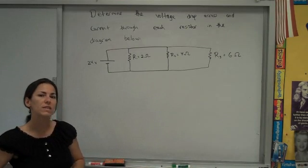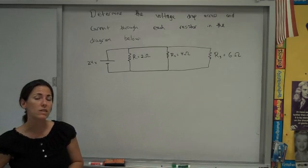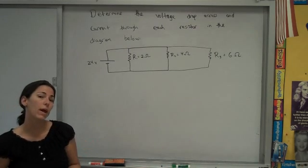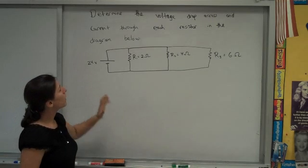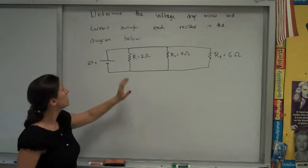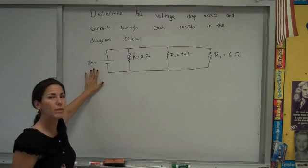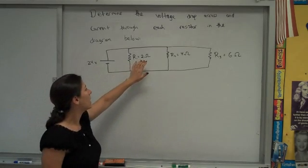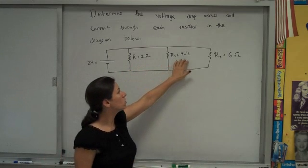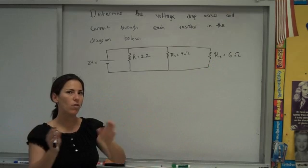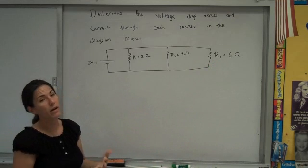You've probably already got some experience solving for unknown variables in series circuits. And now I'd like to take the same approach, but instead look at a parallel circuit. So this problem says, determine the voltage drop across and current through each resistor in the diagram below. And our picture has a 24-volt battery or power source. It's got R1, which is 2 ohms, R2, which is 4 ohms, and R3, which is 6 ohms. And you can see that all those are in branches, and so this is a parallel circuit.